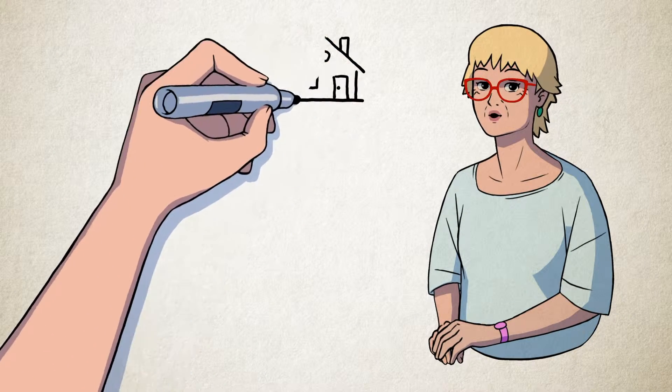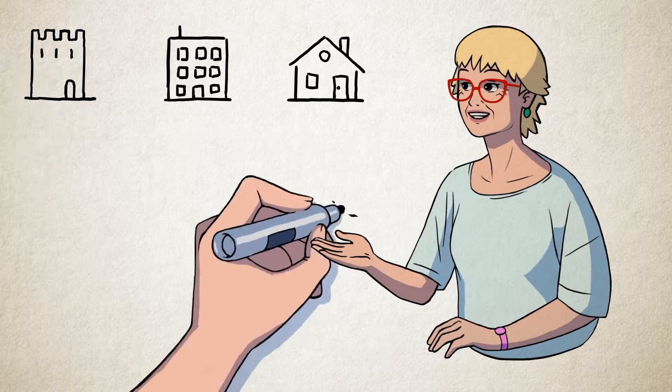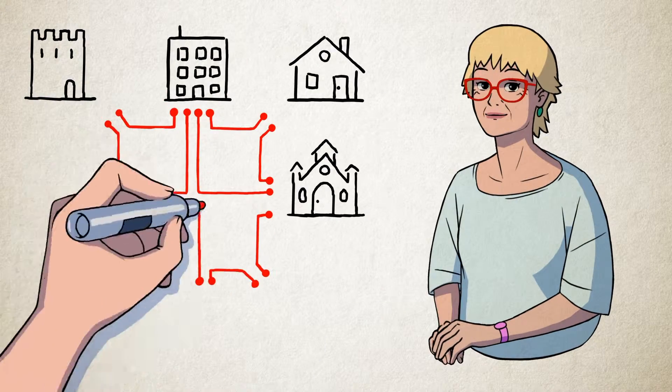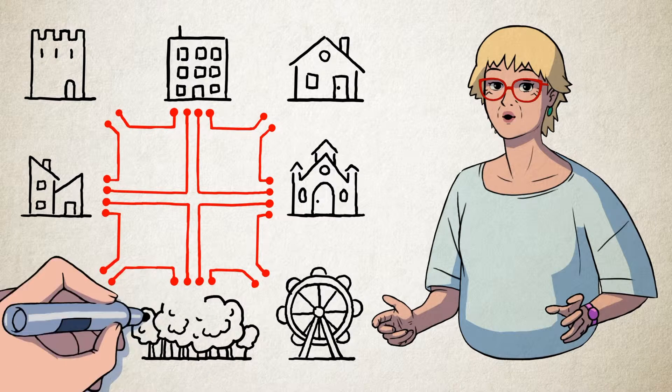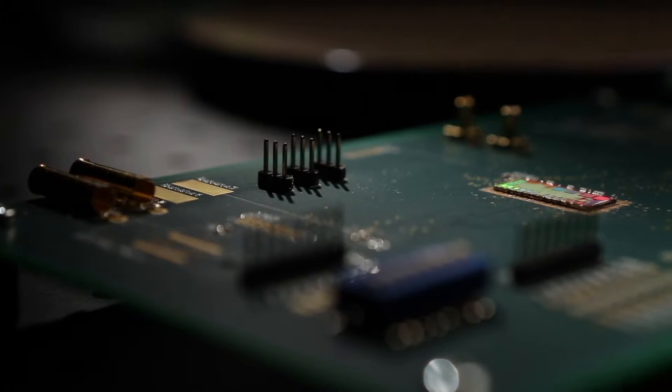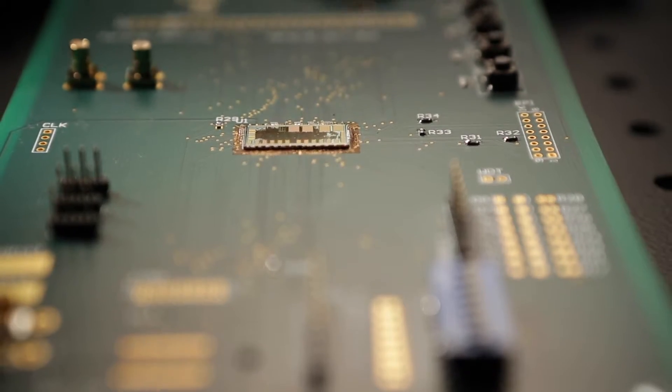Have you ever noticed that electronic circuits look like tiny cities with their own buildings and streets? But just like a city, these circuits are fixed. You cannot change them the way you want. However, this is precisely what we're intending to do.